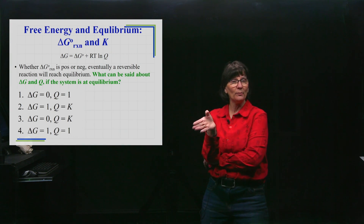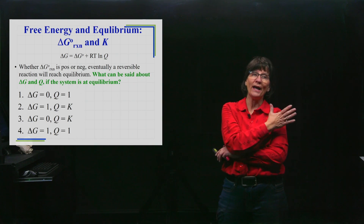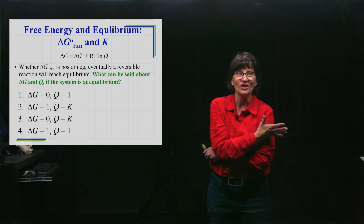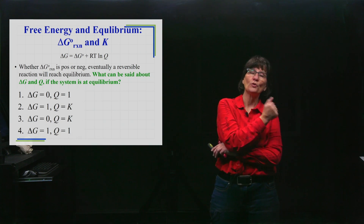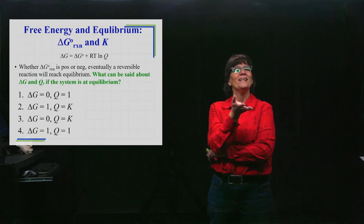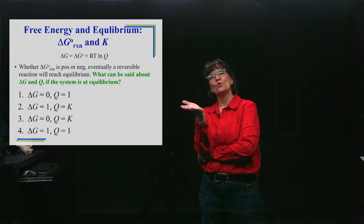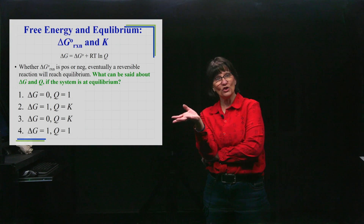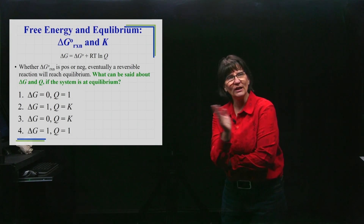It wasn't at equilibrium under standard state conditions. It's either going to proceed to the right towards products because delta G is negative — spontaneous in the forward direction — or if delta G standard is positive, it's going to proceed towards the reactant side to eventually reach equilibrium. It will eventually get there.